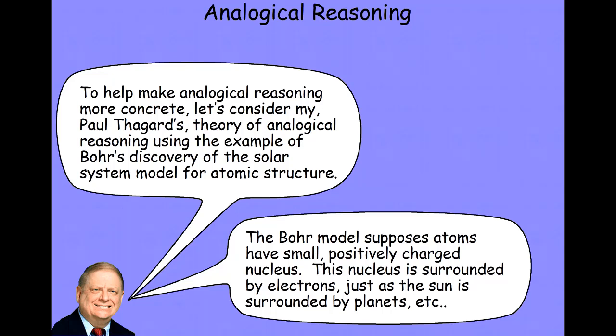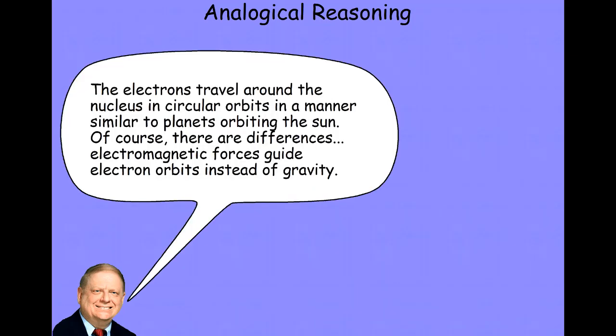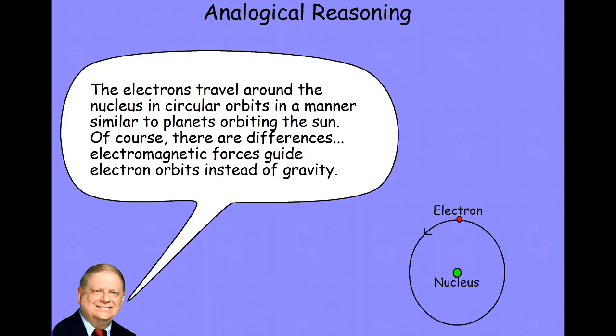For instance, the Bohr model supposes that atoms have small, positively charged nuclei, and that these nuclei are surrounded by negatively charged electrons, just as the sun is surrounded by planets. Now, there are differences, of course, and every analogy breaks down to some degree or another. Things aren't exactly the same, ever. Electrons travel in circular orbits in a manner that's sort of similar to planets orbiting the sun, but not exactly. For instance, they can have a certain number of different possible orbits that they can get into, but they can't get into any orbit. And of course, there are differences in the forces. Electromagnetic forces are the forces that enforce electron orbits. Gravity is the force that enforces planetary orbits. This is a hydrogen atom. It's got a nucleus and a single electron rotating around it in a set pattern on this model.